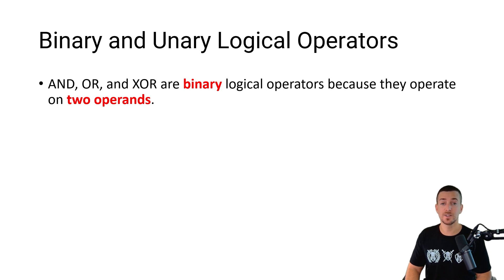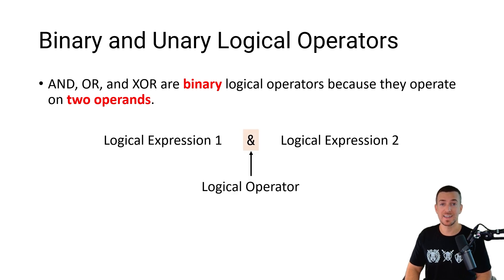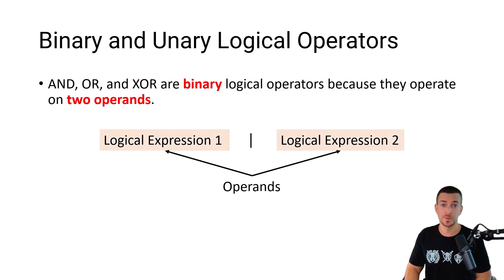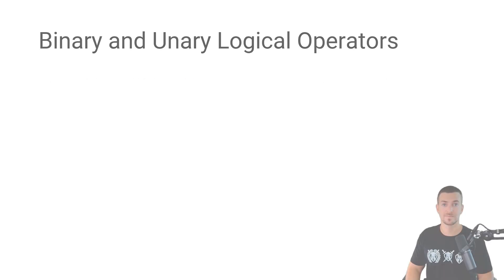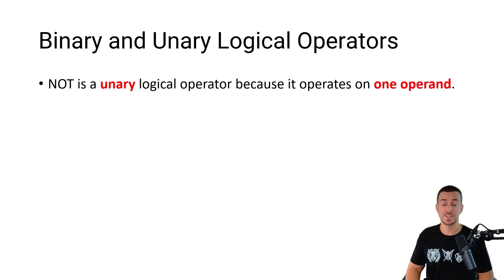AND, OR, and exclusive OR are binary logical operators because they operate on two operands. NOT is a unary logical operator because it operates on one operand.